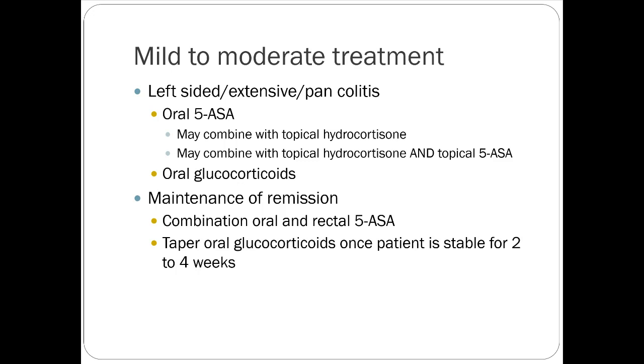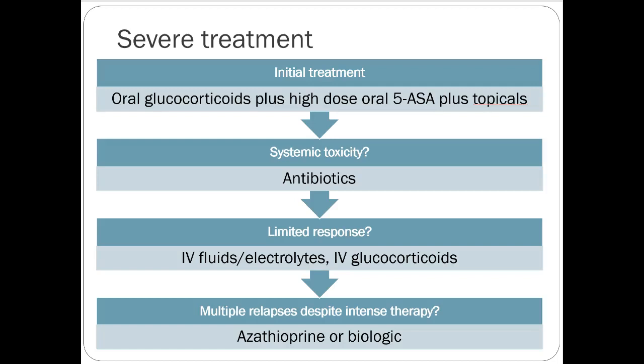Oral glucocorticoids can help for more severe UC flares. Initial treatment for severe ulcerative colitis: oral glucocorticoids plus high-dose 5-ASA drugs plus potentially topicals. If severe UC presents with systemic toxicity looking septic, treat similarly to Crohn's with antibiotics. Limited response leads to IV fluids and IV glucocorticoids. Multiple relapses lead to azathioprine or biologic therapy — the TNF agents apply to UC as well. It's a slightly less severe disease usually than Crohn's but certainly can be debilitating.